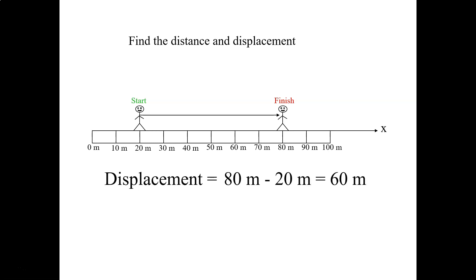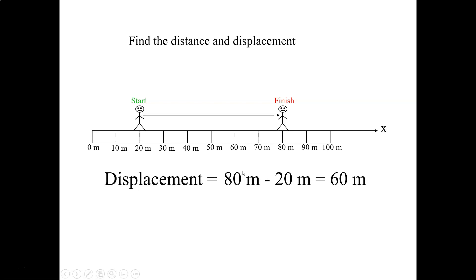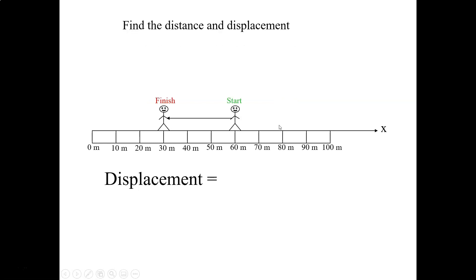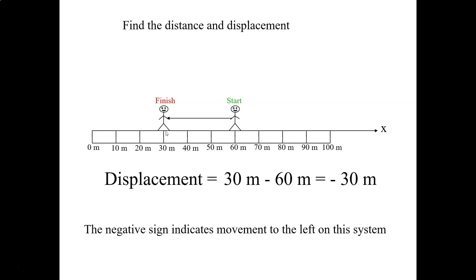Let's find the distance and displacement. My displacement is X2 minus X1, which is 80 minus 20 — that's 60 meters in the positive direction. My distance would also be 60 meters, just without the sign. For the next example, X2 is 30 and X1 is 60, so 30 minus 60 equals minus 30 meters. My displacement is 30 meters to the left, or negative 30 meters, and my distance is just 30 meters without the negative.